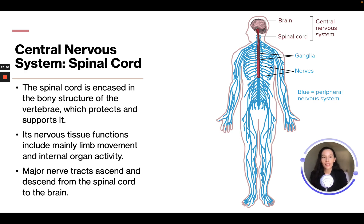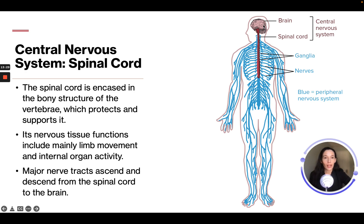The spinal cord is encased in the bony structure of the vertebrae, which protects and supports it. Its nervous tissue functions include mainly limb movement and external organ activity. Major nerve functions ascend and descend from the spinal cord to the brain — the peripheral nervous system nerves come through the spinal cord tract, protected by the vertebrae, and up to the brain.